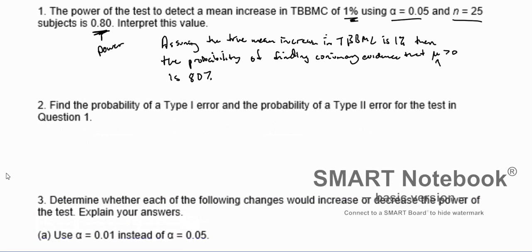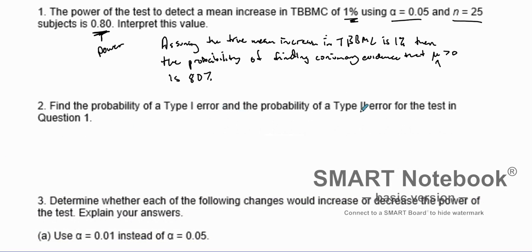Now find the probability of Type I error and the probability of Type II error for the test in question 1. The probability of Type I error is actually equal to alpha, in this case 0.05. Type II error is 1 minus the power of the test, so 1 minus 0.8, that's 0.2. So the percent of Type II error is 20%, Type I error is 0.05.